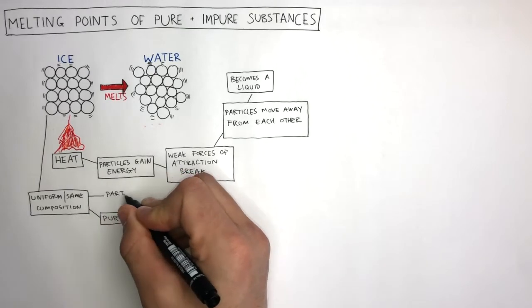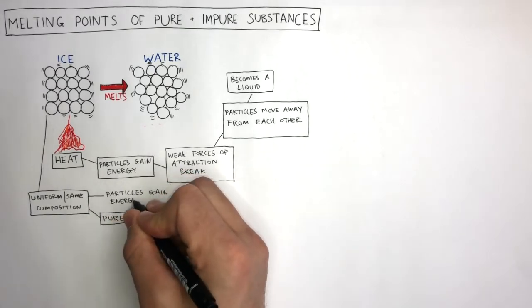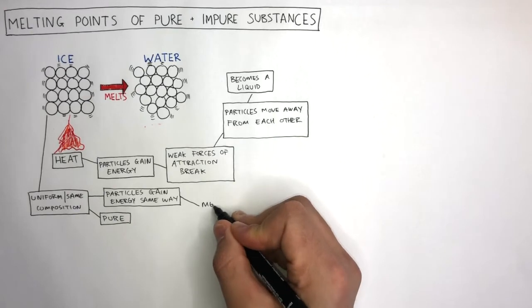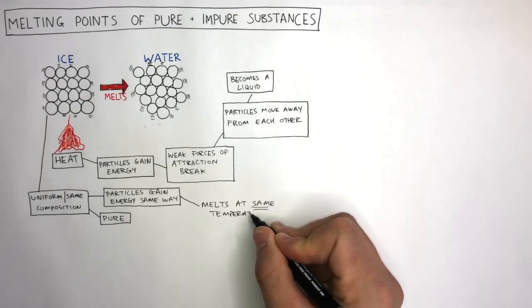All the particles gain energy in the exact same way. Therefore, a pure substance melts at the exact same temperature.